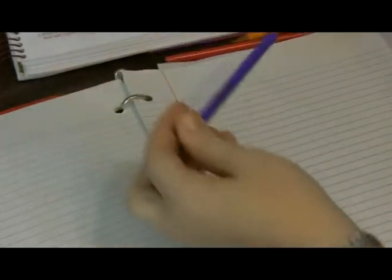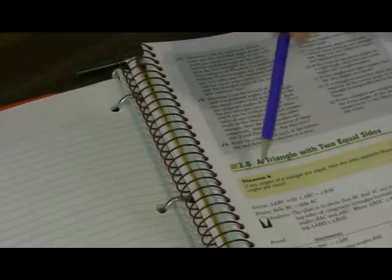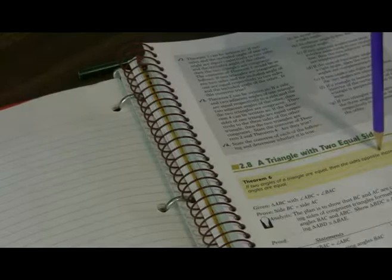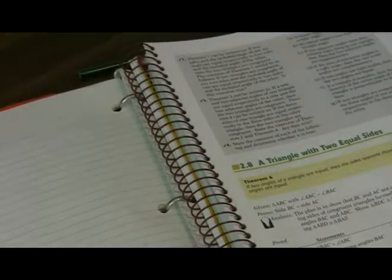Okay, here we are in section 2.8 of the Plane Geometry book. We need to prove theorem 6, which states if two angles of a triangle are equal, then the sides opposite of those angles are equal.